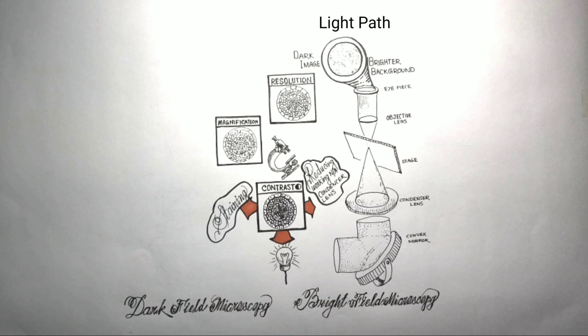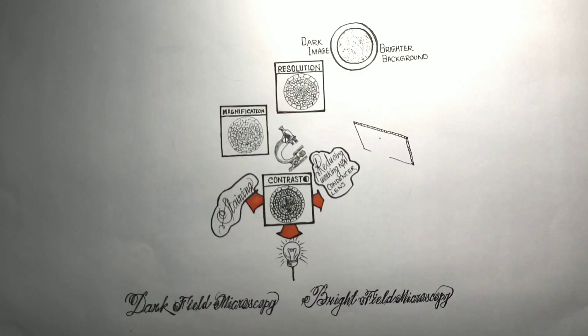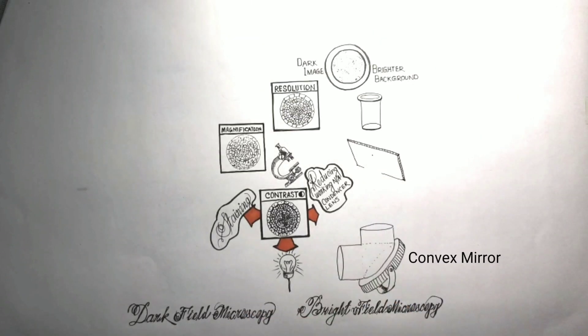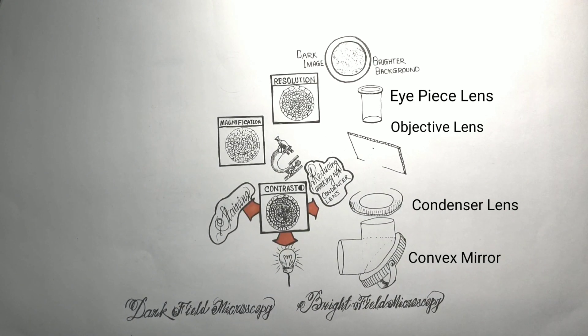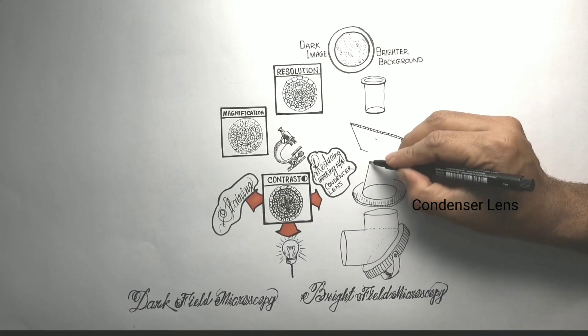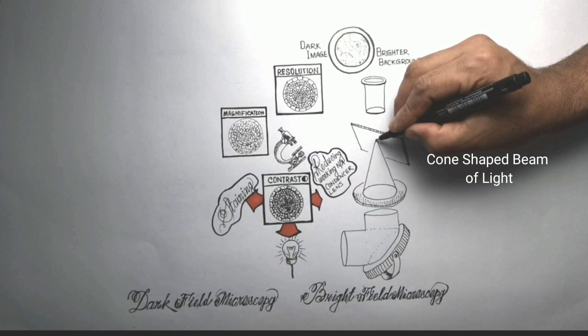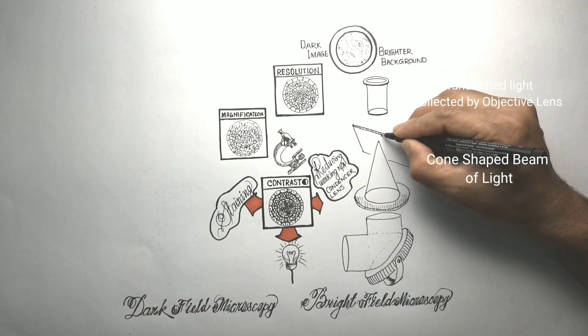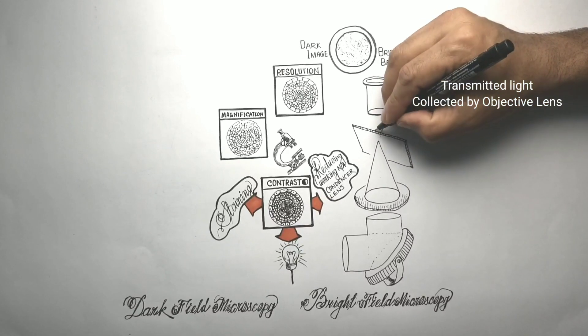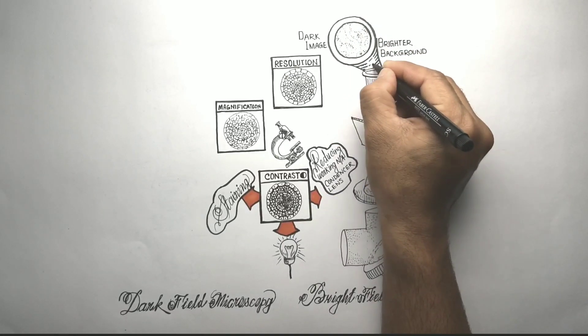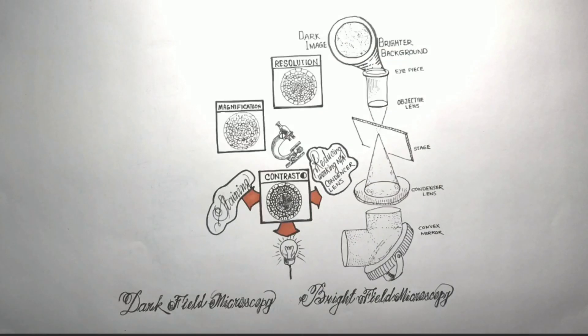Let's understand the light path in bright field microscopy. The light path is extremely simple and requires no additional components. Light from the source is aimed at the condenser lens by a convex mirror. The condenser lens focuses a cone-shaped beam filled with light onto the specimen. Light passes through the specimen and is collected by the objective lens above the stage. The image formed by the objective lens is then magnified by the ocular lens or eyepiece to form an enlarged image in the user's eye.